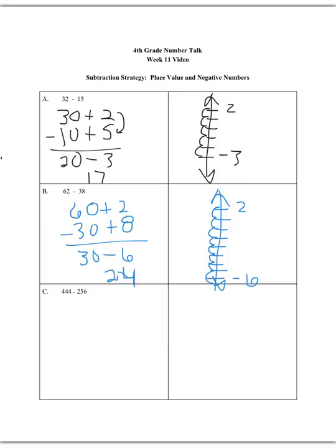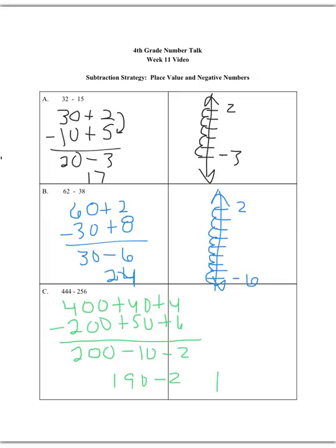Now, if we look at 444 lose 256, well, we would say 400 plus 40 plus 4 is the same as 444. 200 plus 50 plus 6. So if we go to subtract, 400 lose 200 is 200. 40 lose 50 would be a debt of 10. 4 lose 6 would be a debt of 2. So 200 minus 10 is 190, and then lose 2 more would be 188.